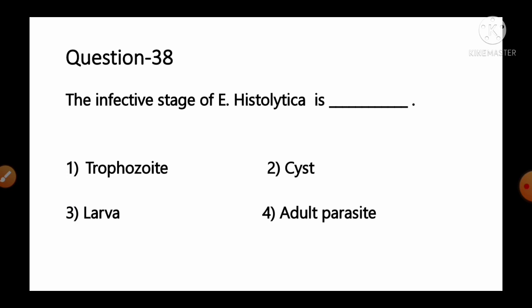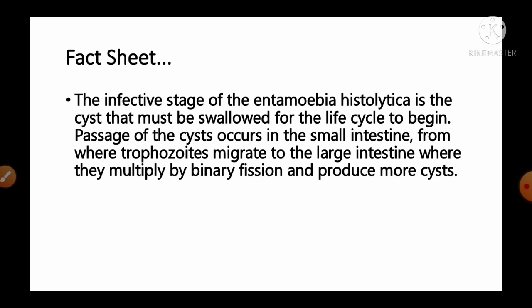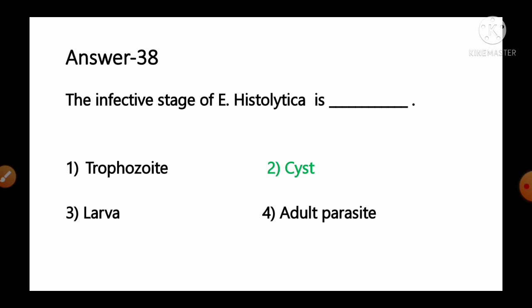Question number 38: The infective stage of Entamoeba histolytica is — options: 1) trophozoites, 2) cysts, 3) larvae, 4) adult parasite. The infective stage of Entamoeba histolytica is the cysts, which must be swallowed for the life cycle to begin. Cysts pass to the small intestine, then trophozoites migrate to the large intestine where they multiply by binary fission and produce more cysts. So option number 2, cysts, is the correct answer.